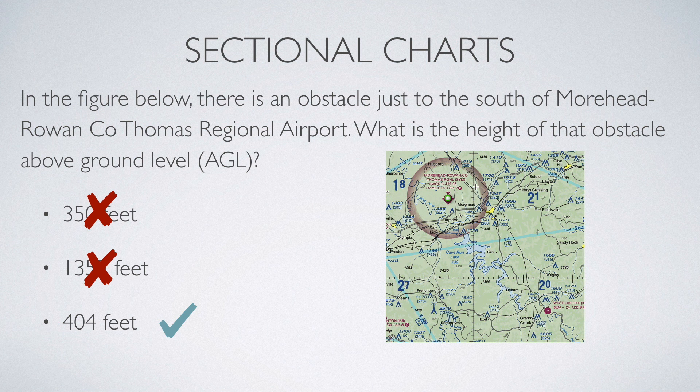As a bonus tip: when it's the A-shape, that means it's one obstacle and it sticks up less than 1,000 feet above ground level. When it's the M-shape, like the one that says 1,334 next to it, that indicates it's a group of obstacles, but again it's still less than 1,000 feet above ground level.